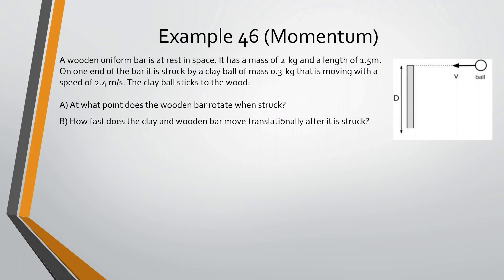Last one. A wooden uniform bar is at rest in space — mass of 2 kilograms and length of 1.5 meters. On one end it is struck by a clay ball of mass 0.3 kilograms moving at 2.4 meters per second. The clay ball sticks to the wood. At what point does the wooden bar rotate when struck? It's going to rotate around the center of mass, which we have to find since the ball is lumped onto it.